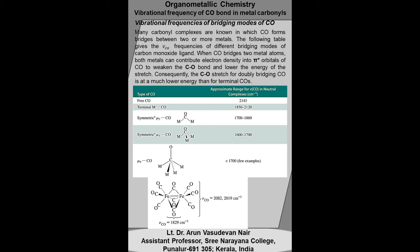The terminal CO stretching occurs in the range 1850 to 2120 cm⁻¹. When doubly bridged (μ2-CO), the CO stretch occurs in the range 1700 to 1860 cm⁻¹. In the μ3 mode, the CO stretch occurs in the range 1600 to 1700 cm⁻¹. In the μ4 mode, the CO stretch occurs below 1700 cm⁻¹.